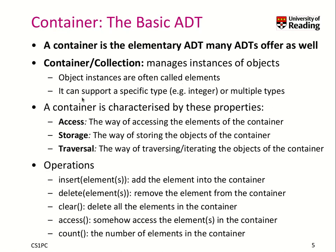A container can support a specific type, like an integer, or it can support any arbitrary type or multiple types with special properties — for instance, numerical data. A container has three basic properties: access, which is how you access the individual elements; storage, how you store the objects; and traversal, how you iterate over the objects in the container.